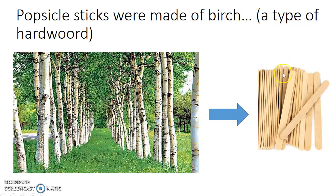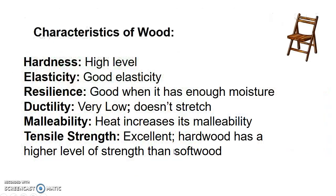The popsicle sticks we use to make our bridges are made of hardwood, specifically from the birch tree. Characteristics of wood: hardness is very high; elasticity is good — some wood is easily flexible depending on thickness; resilience is good enough when the wood has enough moisture; ductility is very low — you cannot make wires out of wood; malleability increases with heat; and tensile strength is excellent, with hardwood having higher strength than softwood.